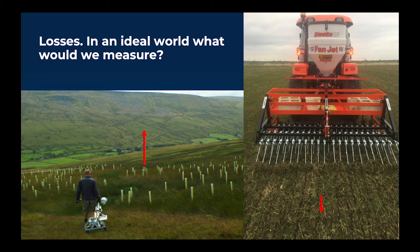For losses down — on the right-hand side of the slide — what determines losses down is infiltration. There are two processes: one is infiltration excess, where rainfall is more intense than the soil is able to cope with; the second is saturation excess runoff, where the soil is full of water and therefore there's more runoff. All these are quite complex processes and the evidence base is not good, as identified in the Working with Natural Processes document published by the Environment Agency. Again, it's not really possible for any of the Defra projects to measure this in great detail.